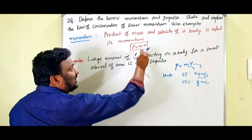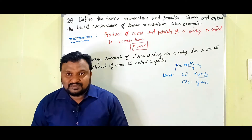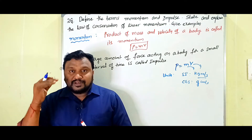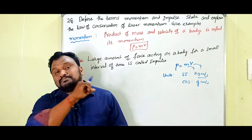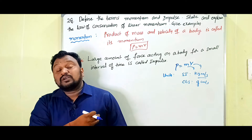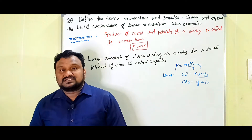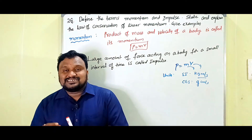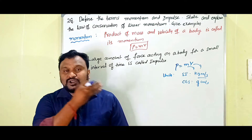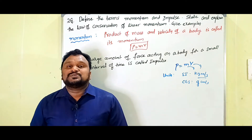That's simply about momentum. Next is impulse. A large amount of force acting on a body for a small interval of time is called impulse. For example, breaking a coconut, or a collision between two vehicles — in a car or lorry accident, it all happens in just a fraction of a second. A large amount of force acts for a small interval of time.